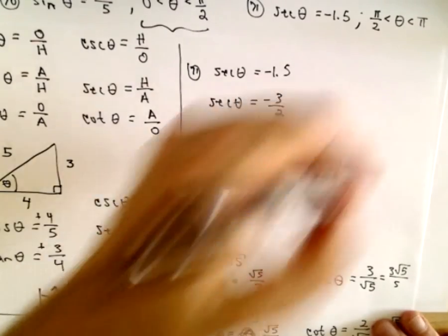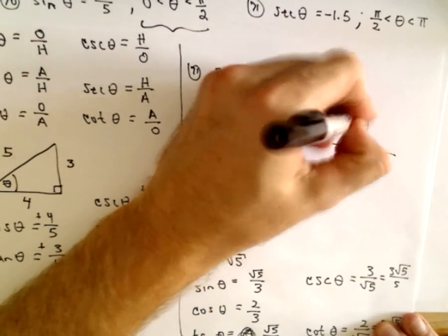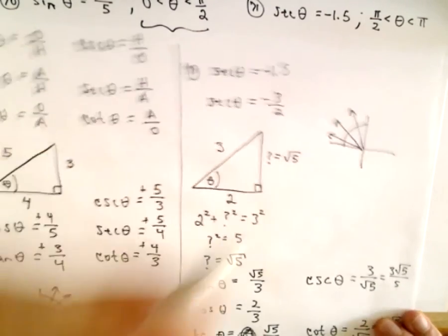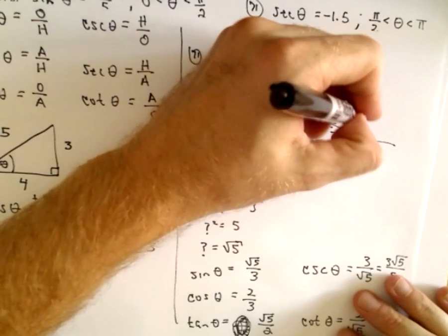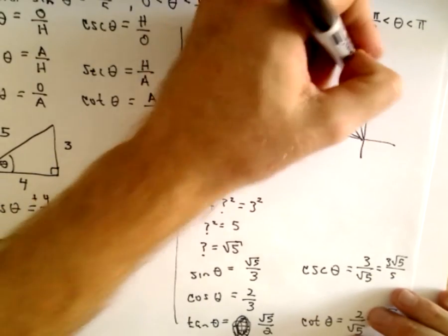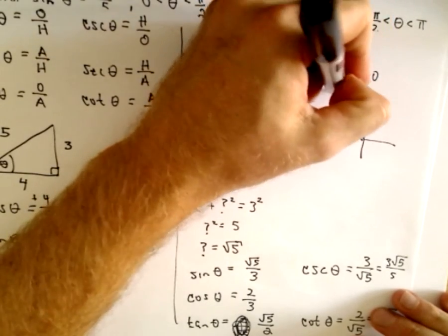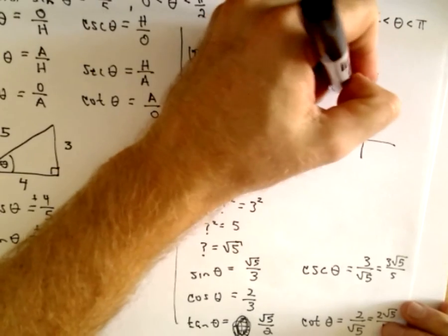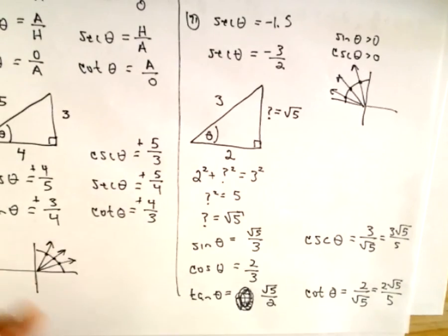And now I'm just going to think about signs. So between pi over 2 and pi, that means I'm in quadrant 2. So in that case, the y-coordinate is positive. So that means that sine is going to be positive. And likewise, cosecant is going to be positive. All the other values will be negative.